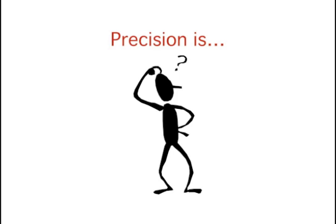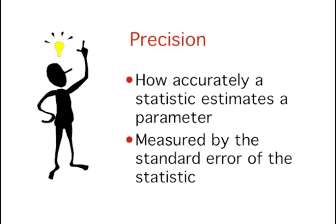Having discussed bias, let's switch back to precision. Do you remember what the definition for precision is? Precision refers to how accurately a statistic estimates a parameter, and it is usually measured by the standard error of the statistic.